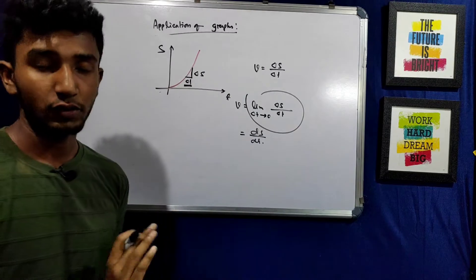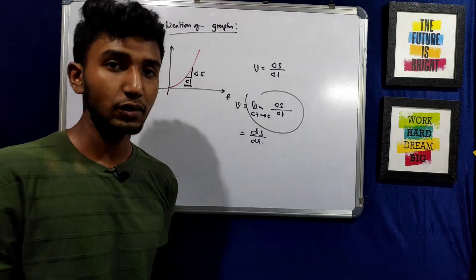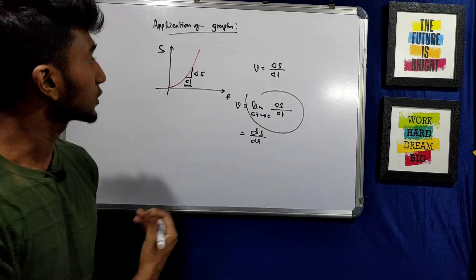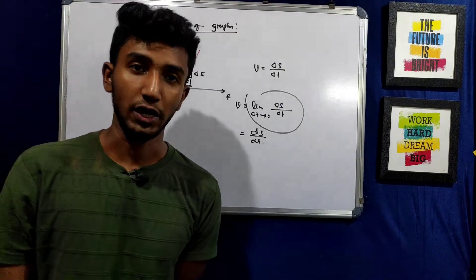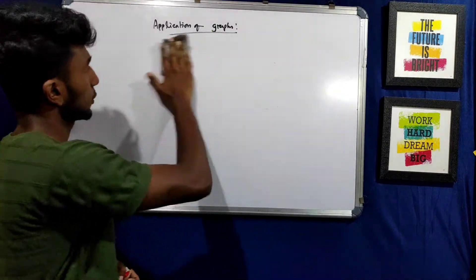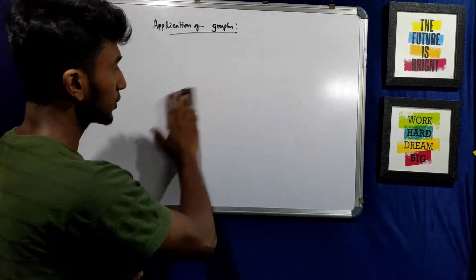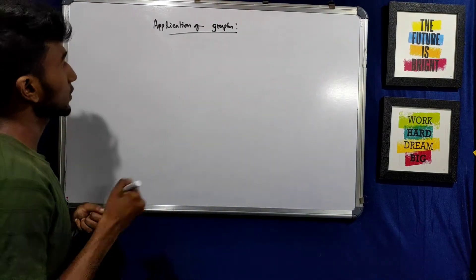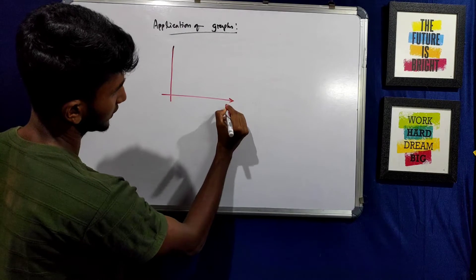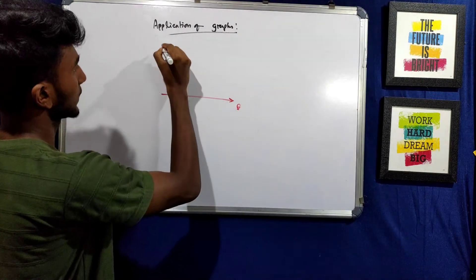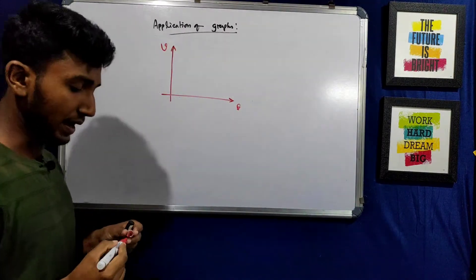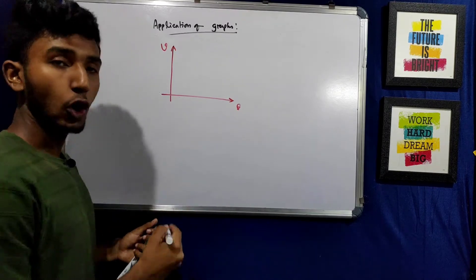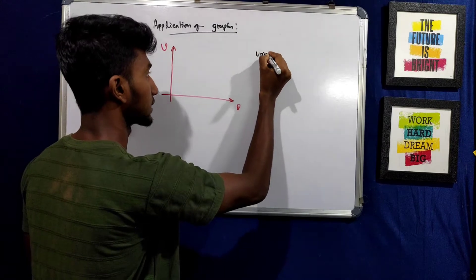Here we saw the application of the displacement-time graph. Here we are basically finding the velocity of an object. Let's move on to the velocity-time graph. We have drawn a velocity-time graph. From that graph, how are we finding displacement? Let's see. In the velocity-time graph, the x-axis represents time and the y-axis represents velocity.